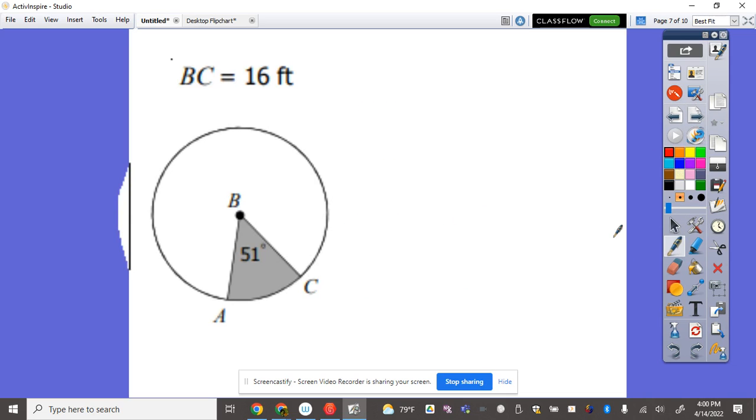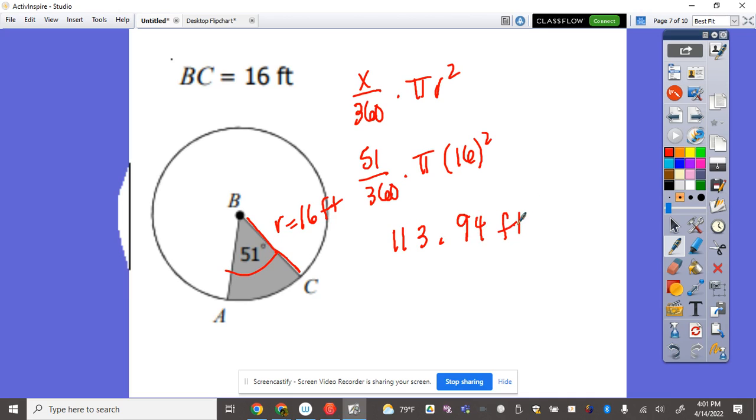Next, here it says BC is 16, that is basically your radius 16 feet. The central angle is 51. x over 360 times pi r squared, so this is 51 divided by 360 times pi 16 squared. So 51 divided by 360 times pi times 16 squared, that will give us 113.94 feet squared.